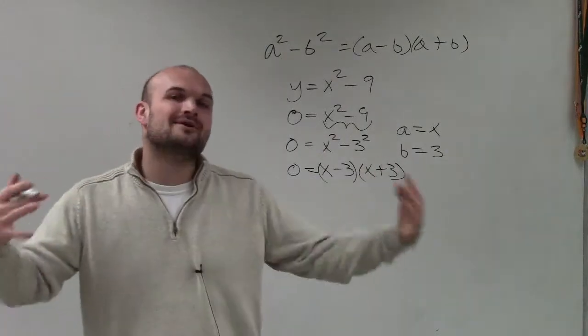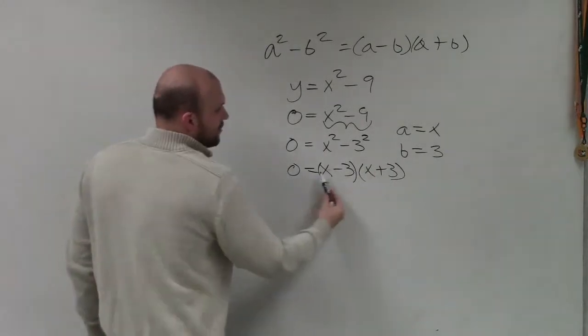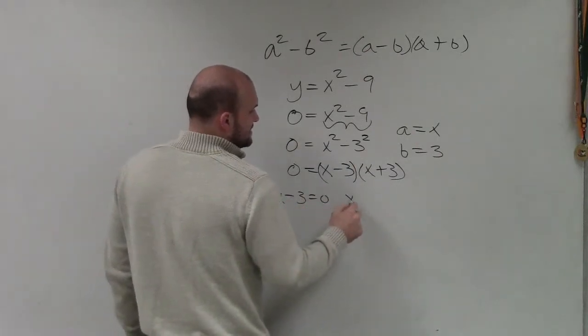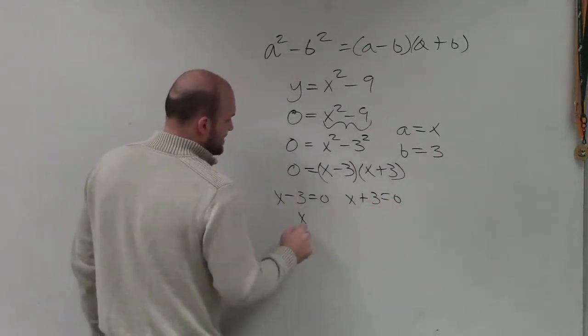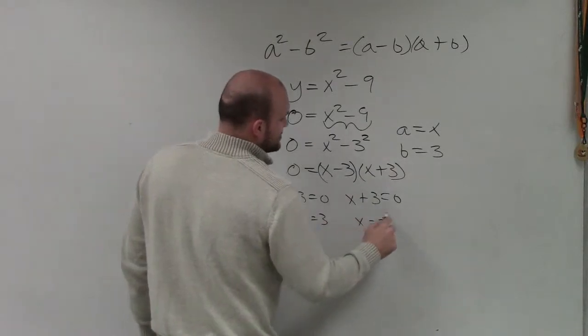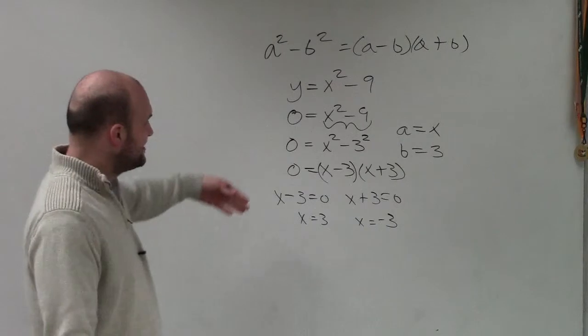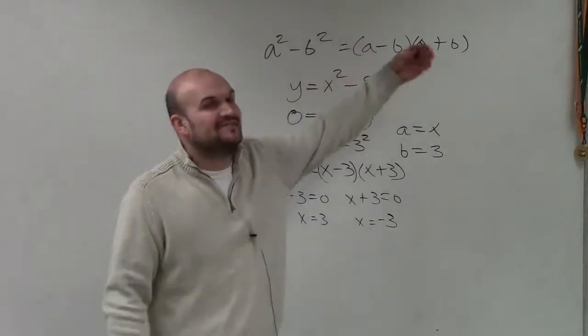And then I now can apply my difference of two squares. So once I have the product set equal to 0, I can now set these equal to 0. And therefore, I can say x equals 3 and x equals negative 3. And what's nice about solving with the difference of two squares is you're always going to have the negative and the positive.